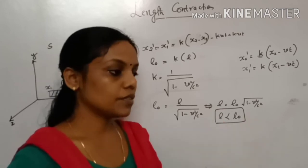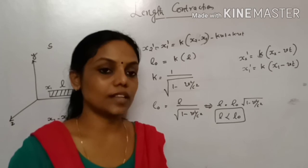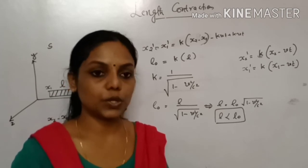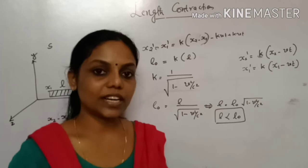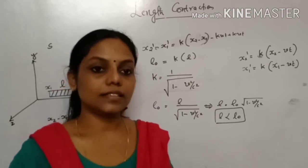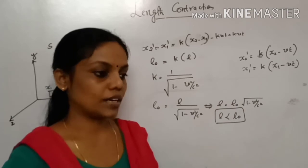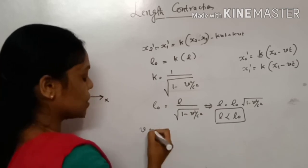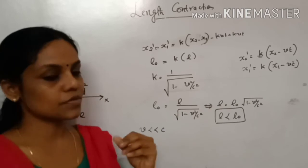When we observe the length from the S frame, it is shorter than the proper length L0. This phenomenon is called length contraction — the length appears to be contracted, shortened, and reduced. In usual situations, V is very much less than C, so the quantity V²/C² is negligible, and L is approximately equal to L0.